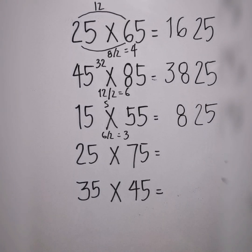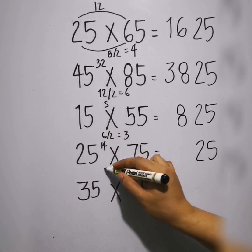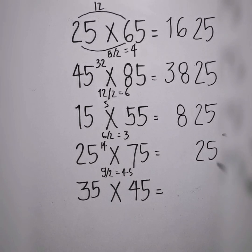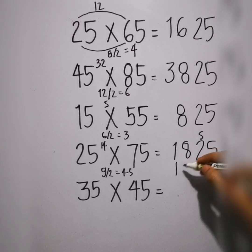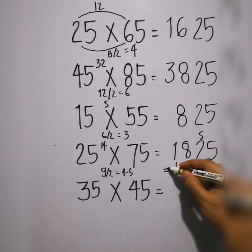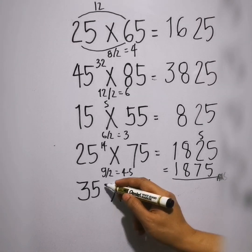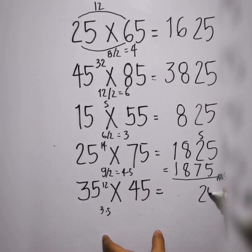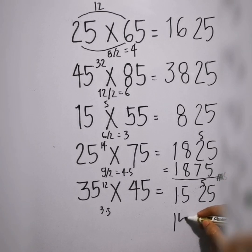Next we have 25 times 75. Put 25 again. 2 times 7 is 14. Then 2 plus 7 is 9. So 9 divided by 2 is 4.5. Add them: 14 plus 4.5 is 18.5. What we do with the 0.5 is put it on top of the 2 — disregard the decimal point. So the answer becomes 1875. Next example, 35 times 45. 3 times 4 is 12. 3 plus 4 is 7. Half of 7 is 3.5. So 12 plus 3.5 is 15.5. The 0.5 goes on top of the 2, giving us 1575.